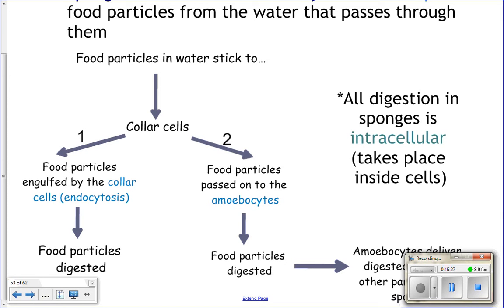Sponges have to filter an incredible amount of water to get just a little bit of food. They have to filter about one ton of water to get one ounce of food — about the size of a Jolly Rancher — because the food they're eating is that small.